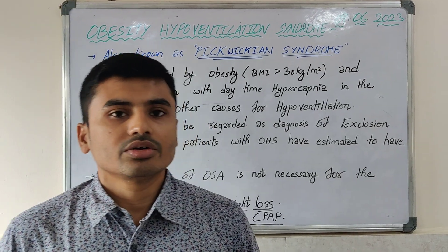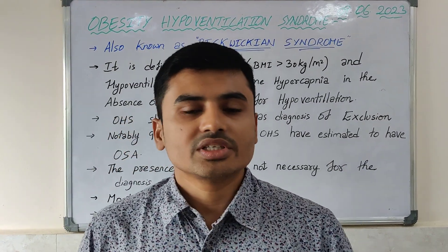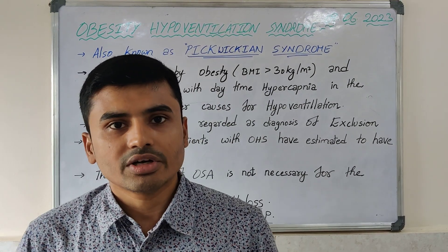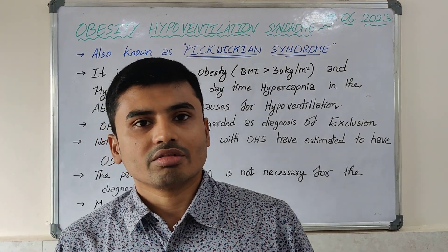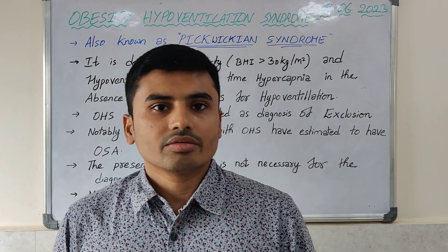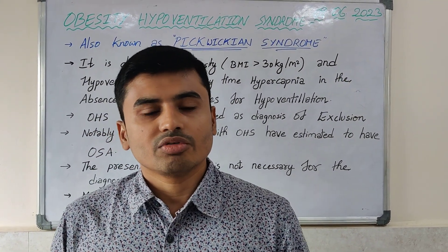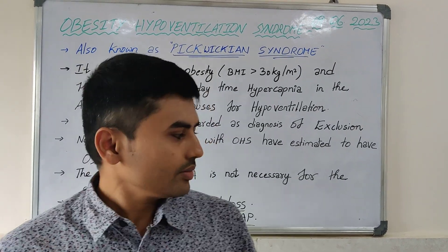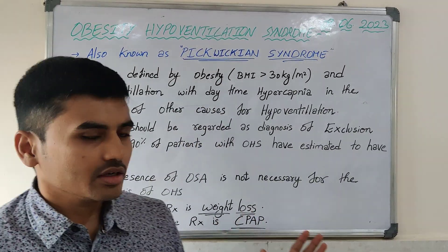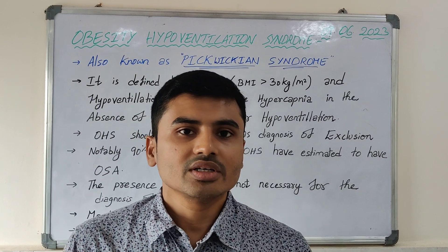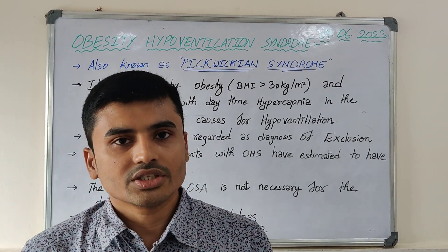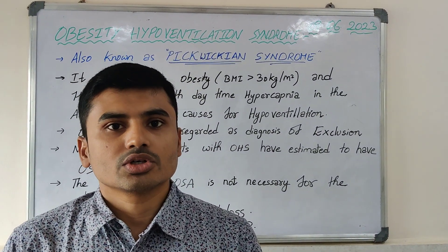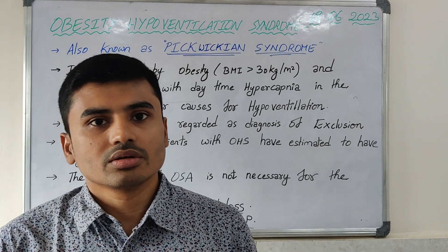The most effective treatment for obesity hypoventilation syndrome is weight loss. Approximately 25 to 30% weight loss is required for OHS symptoms to reduce. The other first-line treatment is CPAP — Positive Airway Pressure Ventilation. Mostly, we give nocturnal continuous positive airway pressure via a CPAP machine.